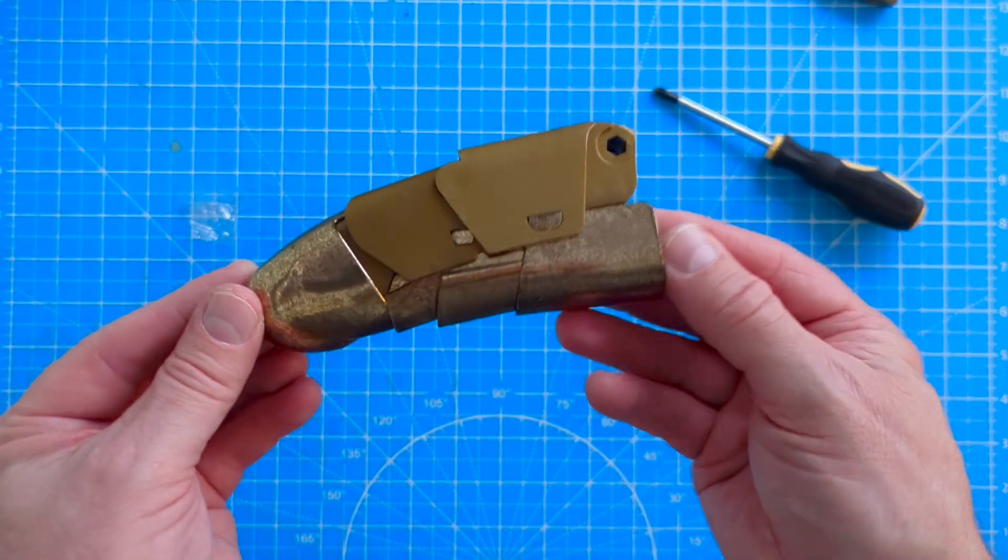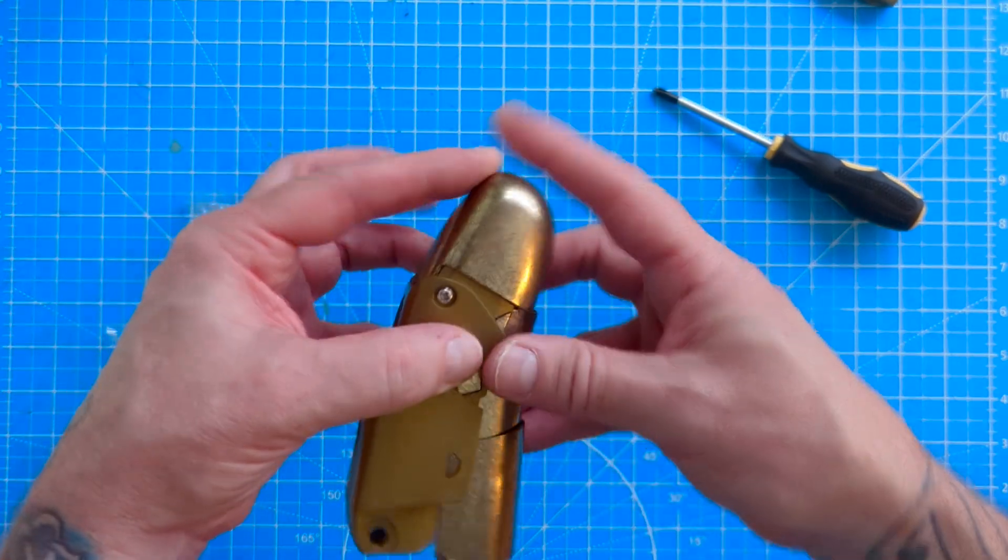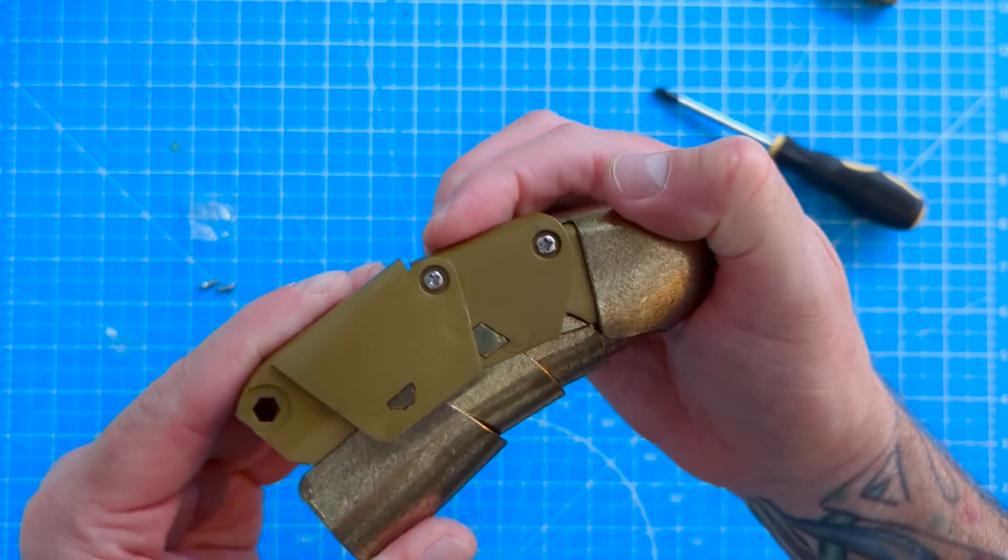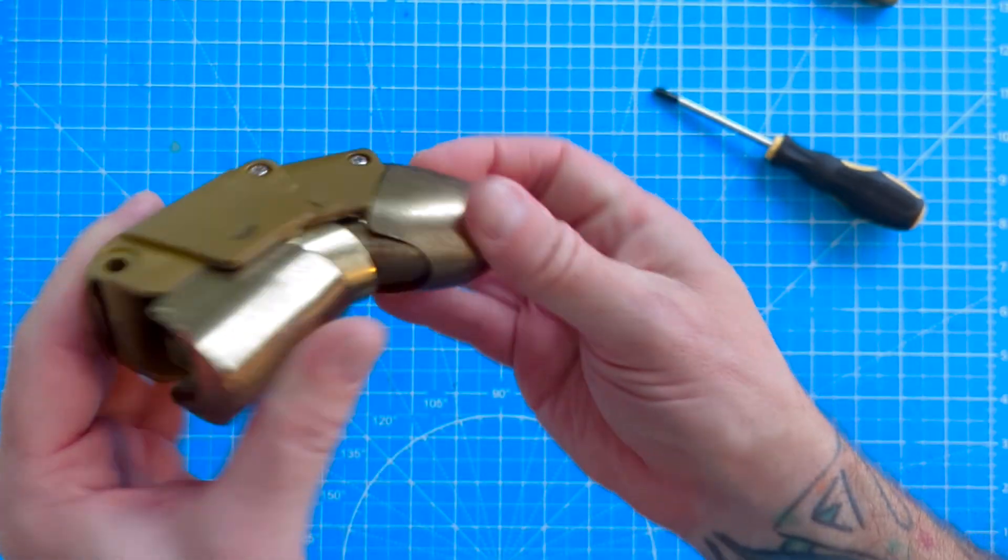Easier done than said. And once that's in, we'll screw that in with another one of them silver screws. And there you go. That's those two stages. I think you'll agree the finger is definitely taking shape. And look, it bends and everything as well. That's pretty cool.